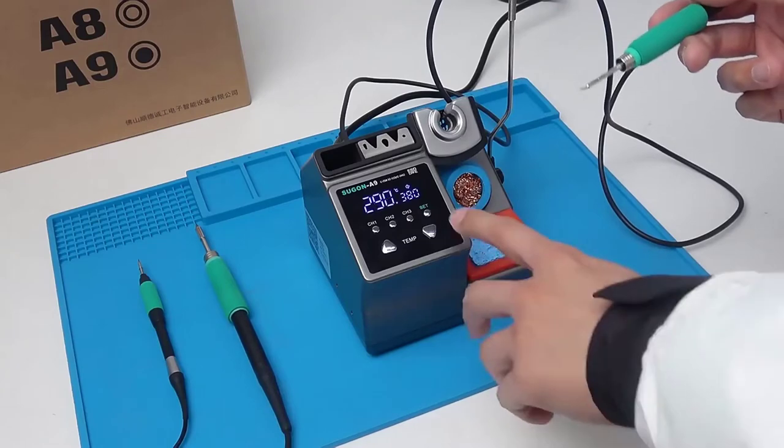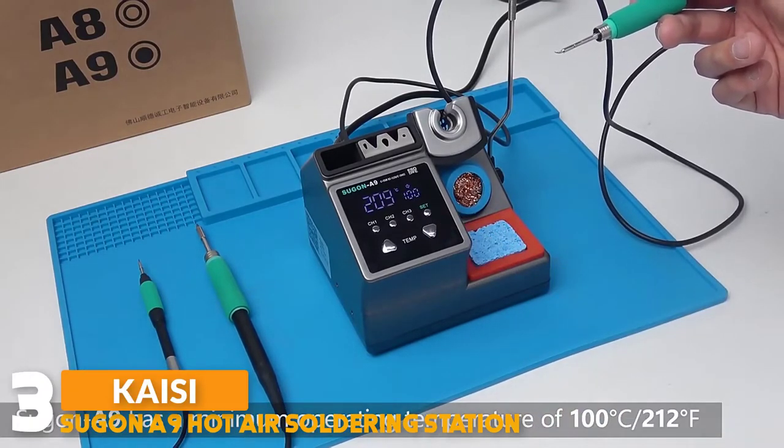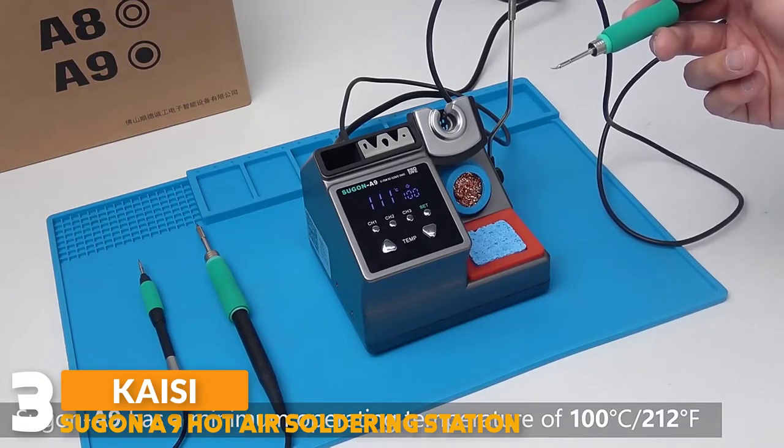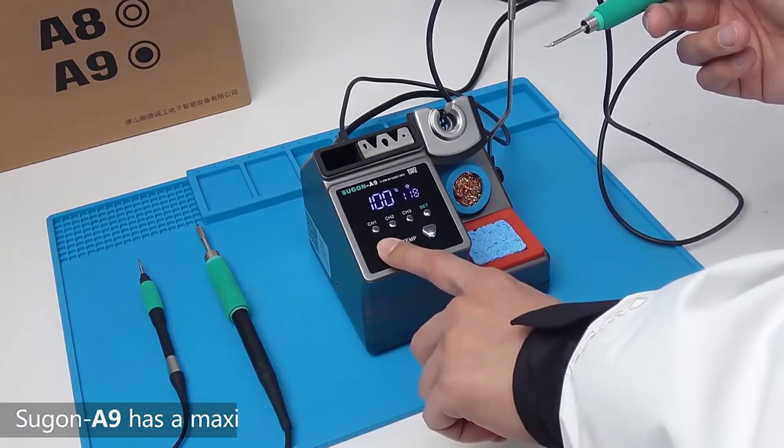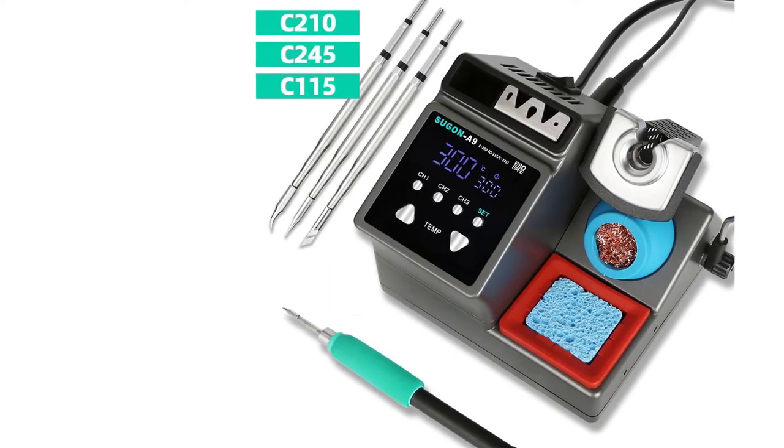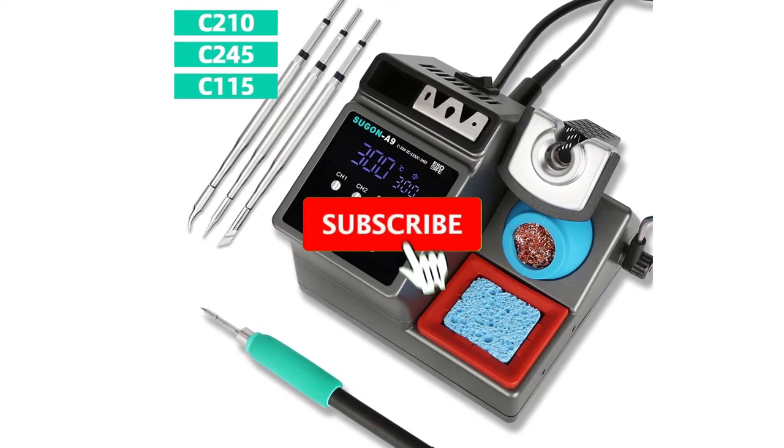Number 3. Sugan A9 hot air soldering station. The Sugan soldering iron station is 120 watt power, heats up quickly from standby temperature to 716 degrees Fahrenheit working temperature in 3 seconds. Digital soldering iron station kit with PID temperature control to control the temperature and rise steadily.